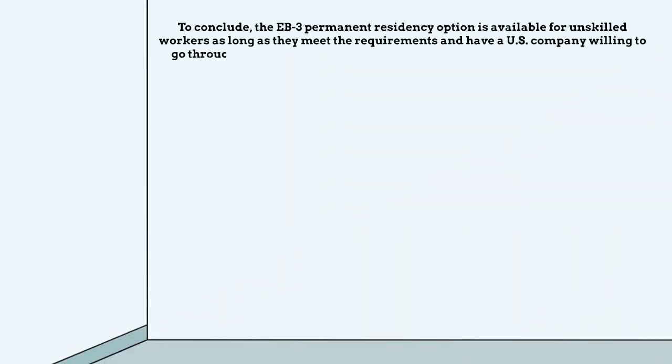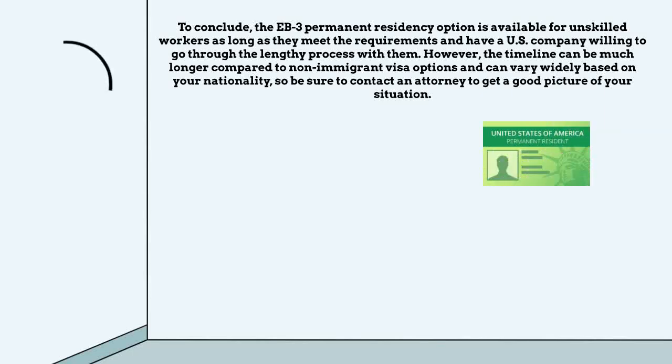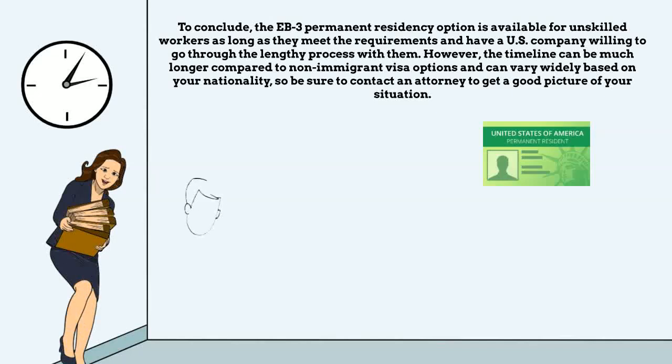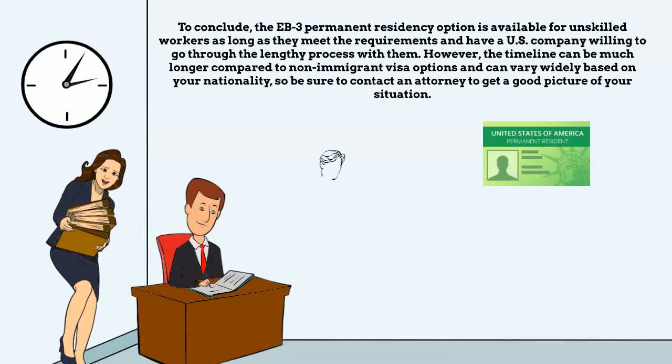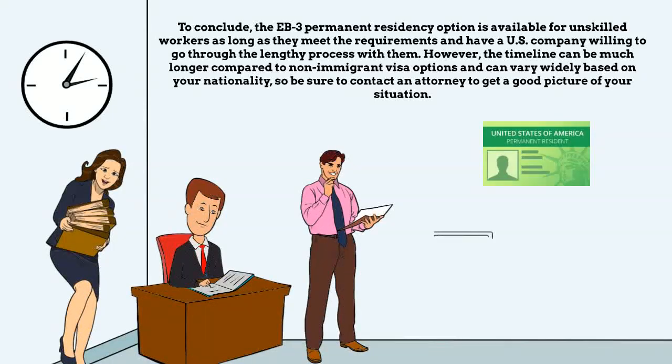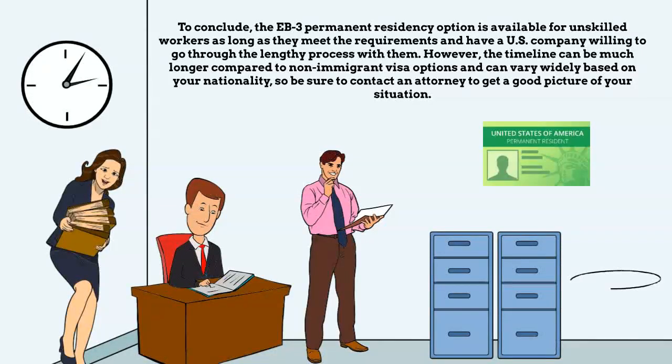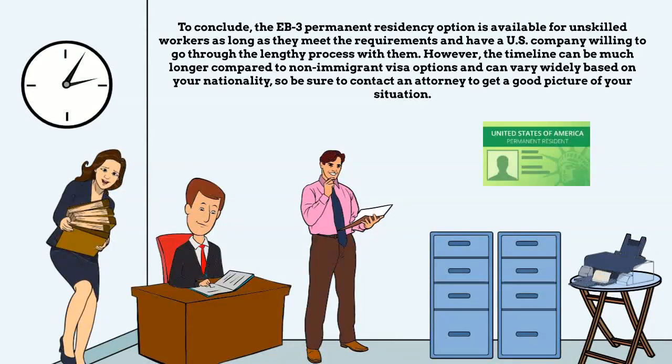To conclude, the EB-3 permanent residency option is available for unskilled workers, as long as they meet the requirements and have a United States company willing to go through the lengthy process with them. However, the timeline can be much longer compared to non-immigrant visa options and can vary widely based on your nationality, so be sure to contact an attorney to get a good picture of your situation.